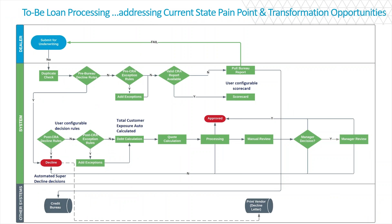You've seen the technology components — now, part of the future state operating model is around the redesign of a future state business process. The previous process flow looked fairly convoluted and painful. Upon reflection, if you review this diagram versus the pain points, you should be able to clearly reconcile that this future way of working from a business process standpoint should reconcile and eradicate upon implementation the pain points that were previously presented.